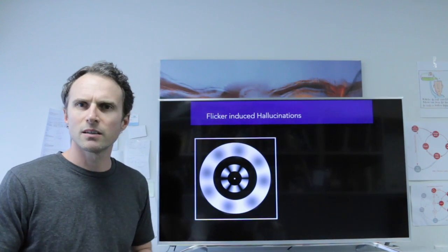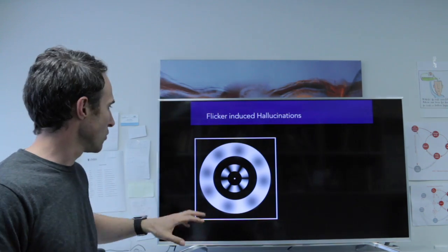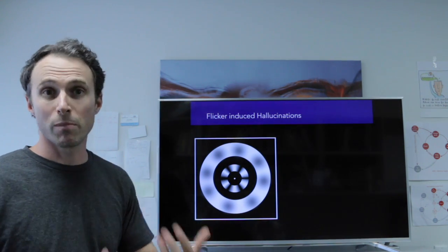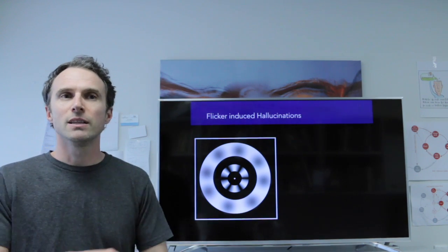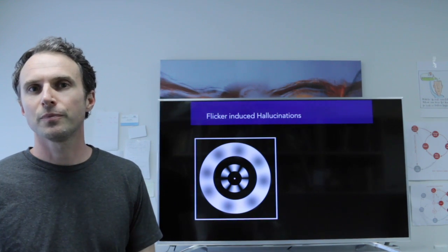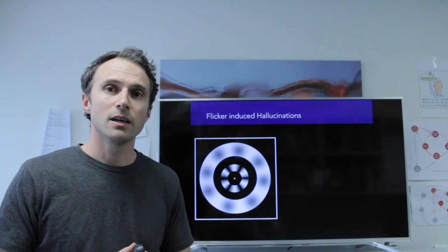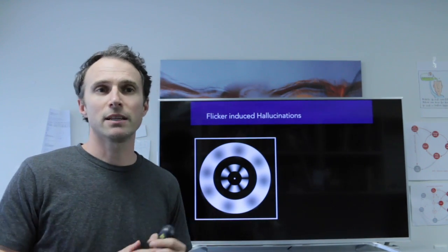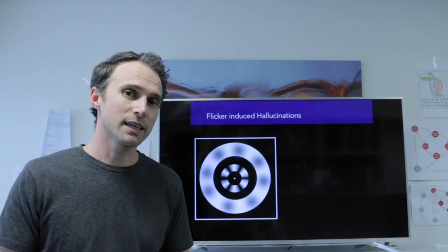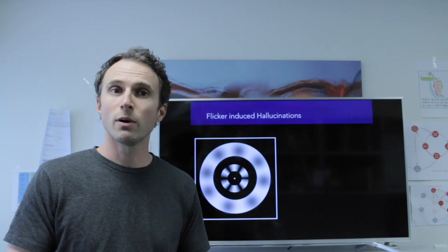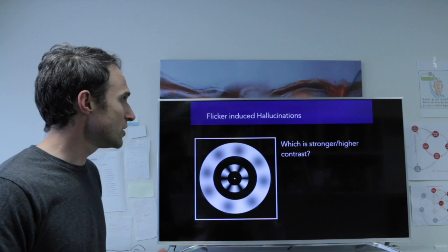So we designed a stimulus like this, where we would have the flickering ring, just like I showed you before, but without any blobs in there. So we want people to hallucinate the blobs in the outer ring. But in this inside ring here, we're going to have these black and white patterns. And we show people this stimulus and all they have to do is tell us in which ring is the pattern stronger. They have to tell us one of the rings, they can't say I don't know, or they can't say they look the same, but force them to make a choice, the large ring or the small ring.